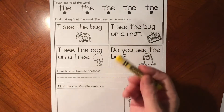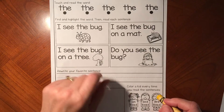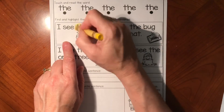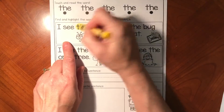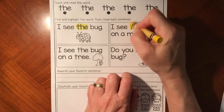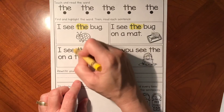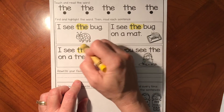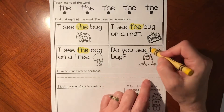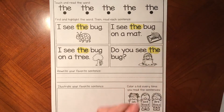Now with my yellow highlighter crayon, do you remember what I'm going to do? Find and highlight the word. There it is — 'the,' I found it. Let's look for it again. 'The,' I found it. There it is. 'The,' I found it. There it is. 'The,' I found it. Now that we highlighted the word 'the,' we're going to read each sentence.